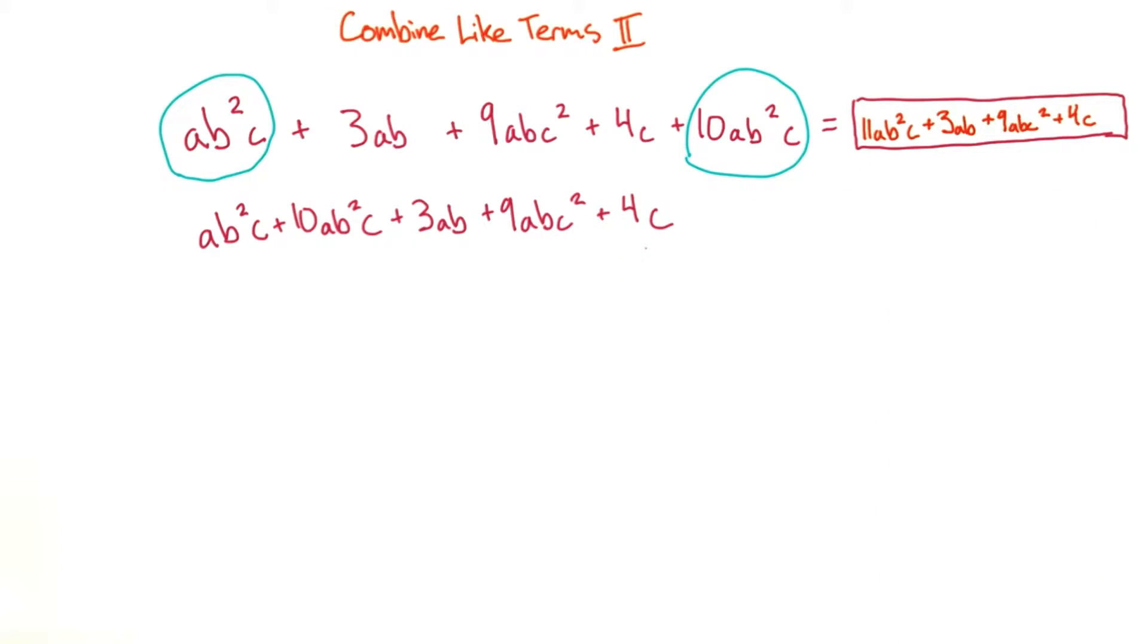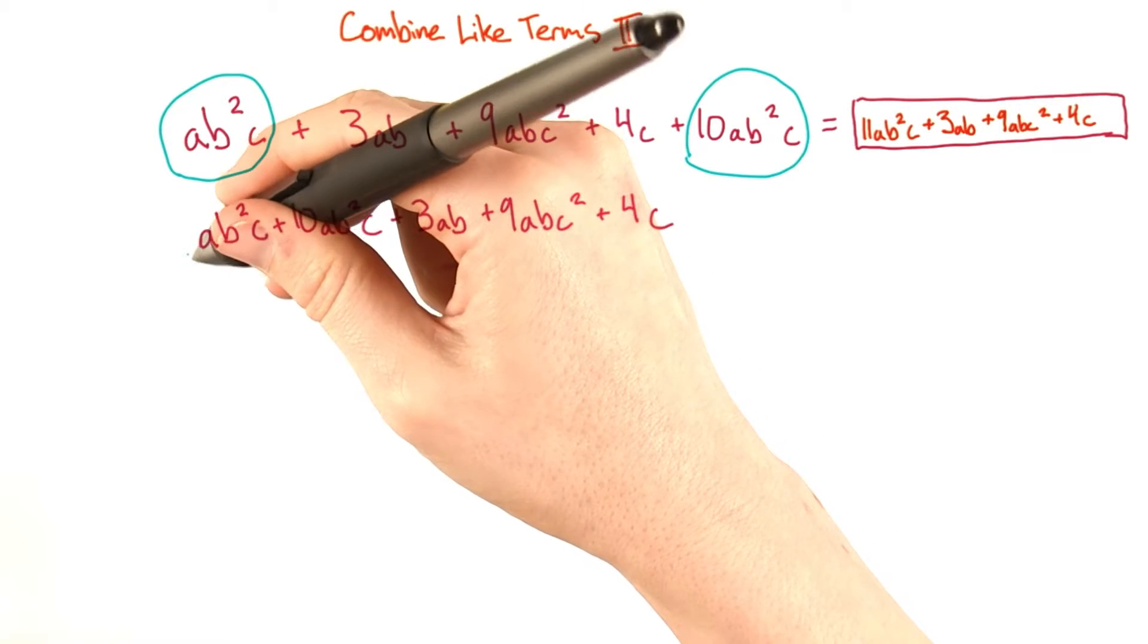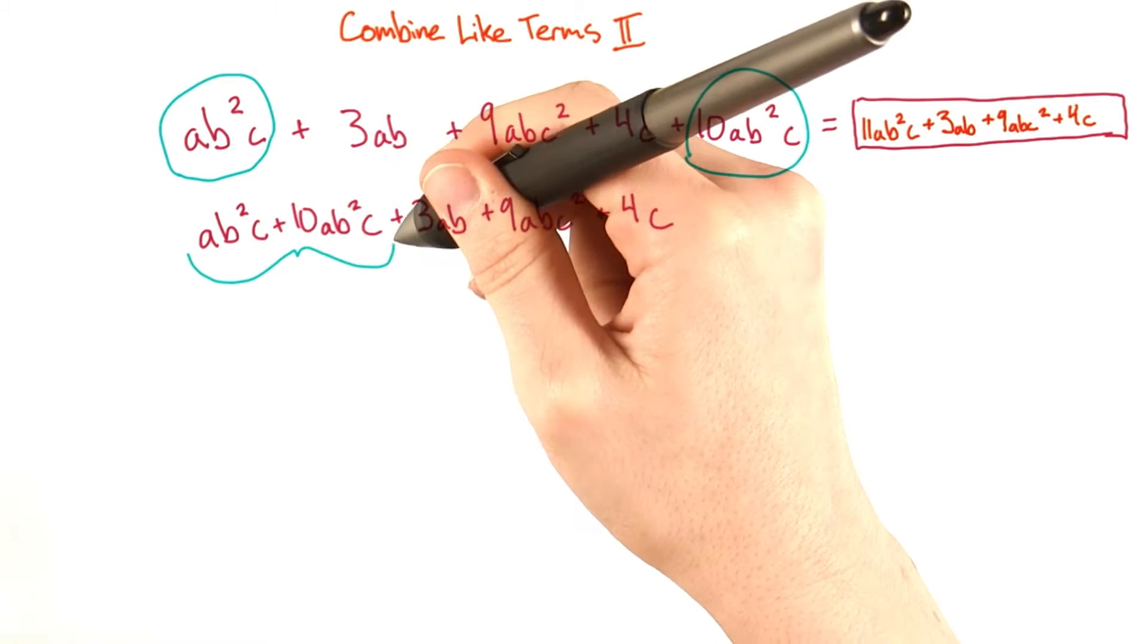Now we can combine our like terms, which are ab squared c and 10ab squared c.